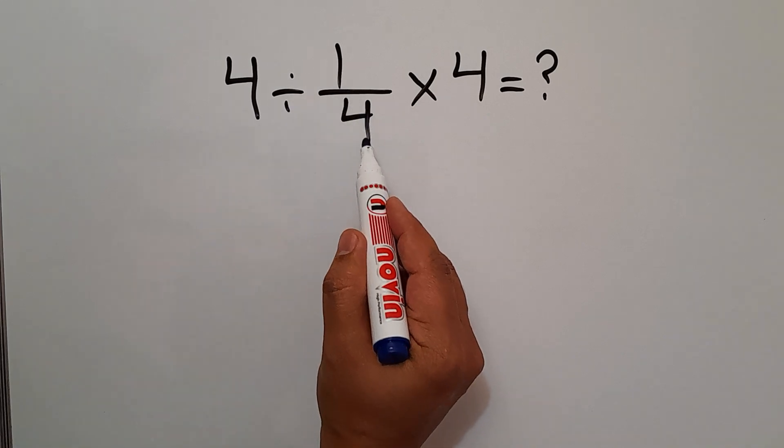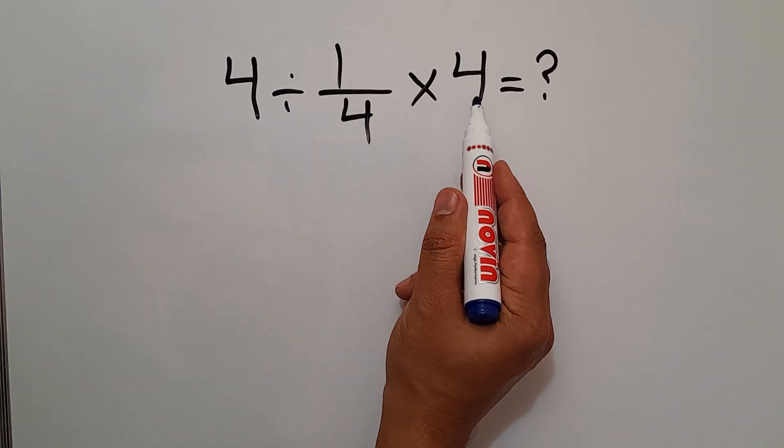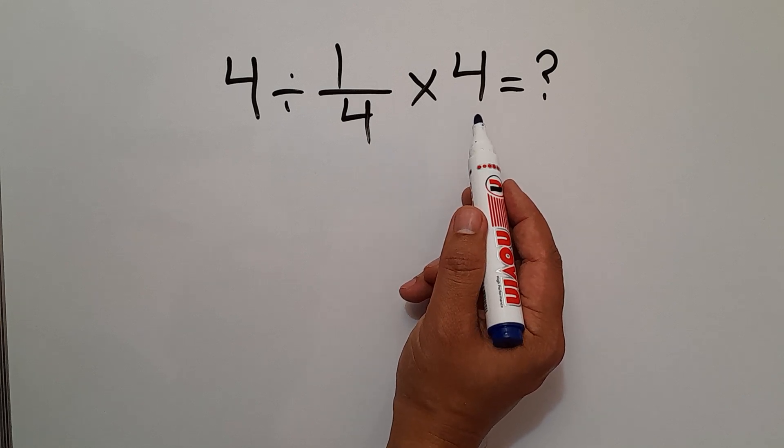4 divided by 1 over 4, then times 4. Are you ready to solve? Let's go ahead and start.